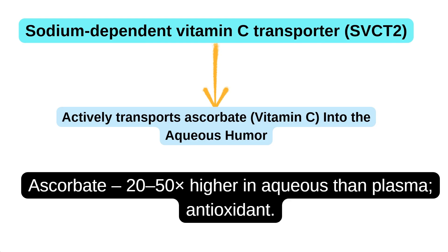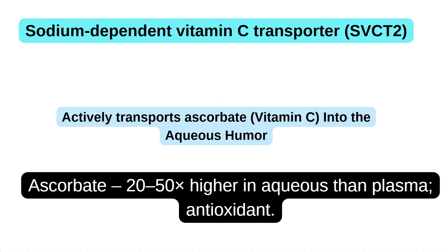One fascinating aspect of active transport is the active transport of ascorbate, which is vitamin C. This occurs via a special transporter known as the sodium-dependent vitamin C transporter, abbreviated as SVCT2. Ascorbate levels in the aqueous are about 20 to 50 times higher than in plasma, because it protects the lens and cornea from oxidative damage.